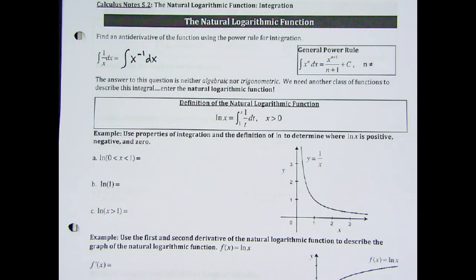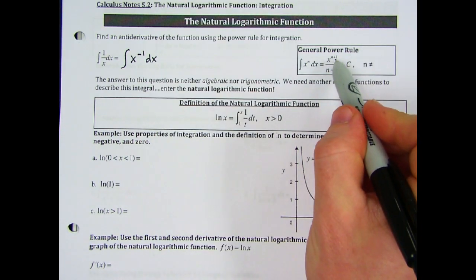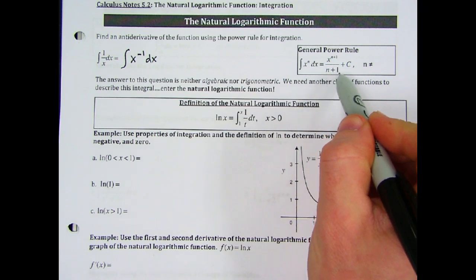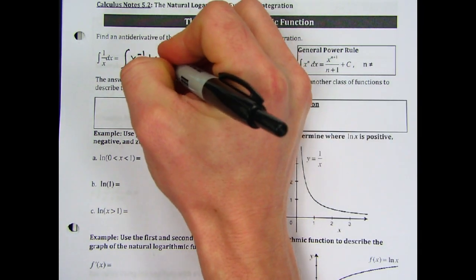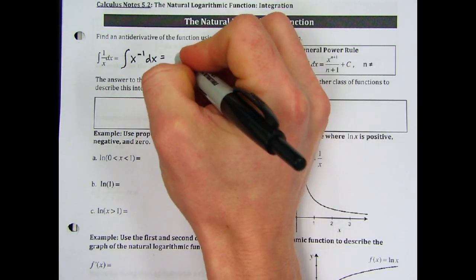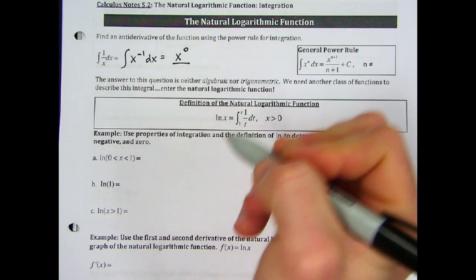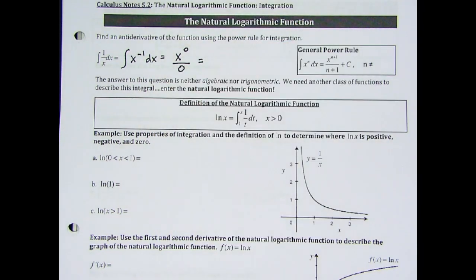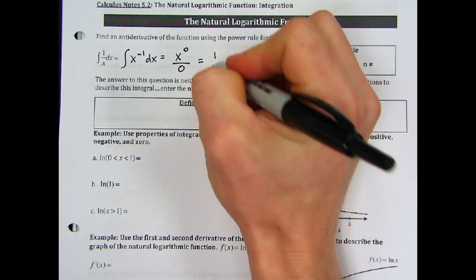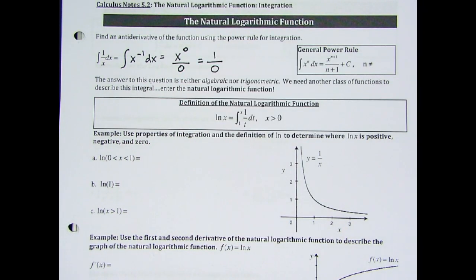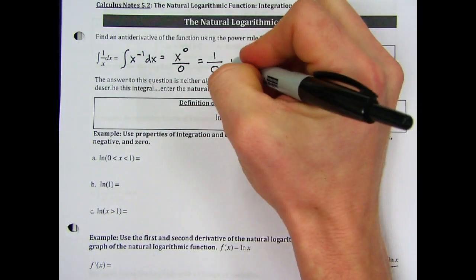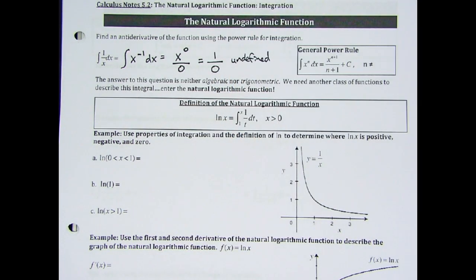Using the power rule, we add 1 to the power and divide by that raised power. So we get x to the negative 1 plus 1, which is x to the 0, and then we divide by that raised power of 0. We get x to the 0 over 0, which is 1 over 0 — undefined. So using the power rule fails at finding an antiderivative of 1 over x because we end up with something that is undefined.